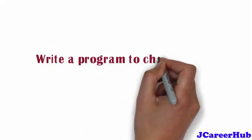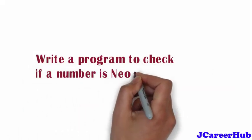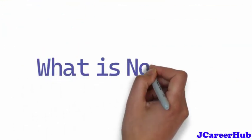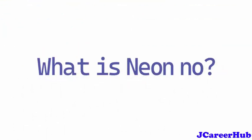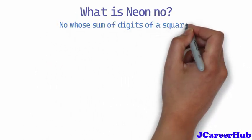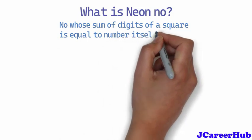Write a program to check if a number is neon number or not. First of all, understand what is neon number. A number whose sum of digits of a square is equal to the number itself is a neon number.